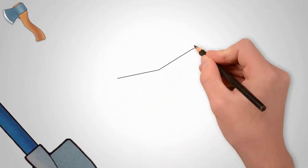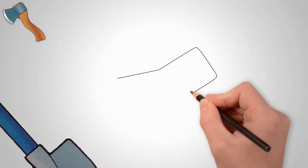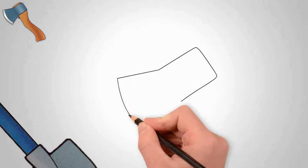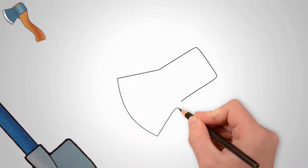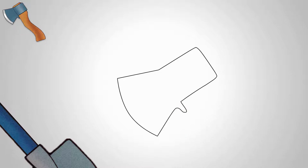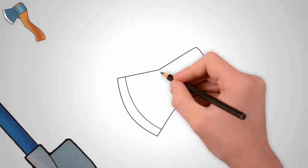Now let's draw an axe. We draw the axe itself, which cuts firewood, cuts tree branches in the garden. Draw the sharp part of the axe and the butt, or the blunt part of the axe. Draw the details of the axe.